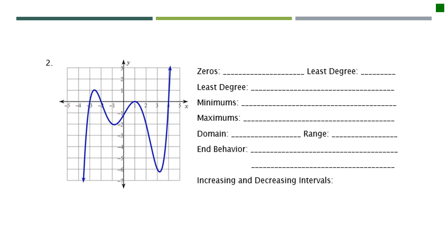For this graph, we're first looking at zeros — where the graph crosses through the x-axis. I have zeros at negative 3, negative 2, positive 1, and positive 4. At positive 1, the graph bounces off the x-axis, so that's a double root. That means the least degree is actually five, even though I only wrote four numbers, because one counts twice.